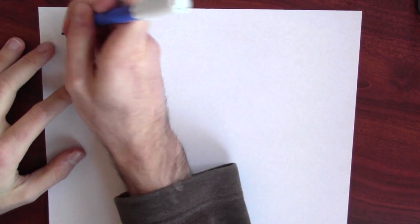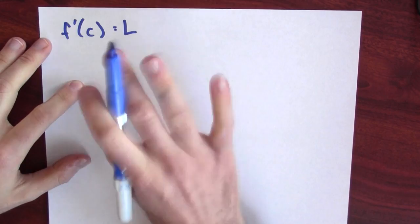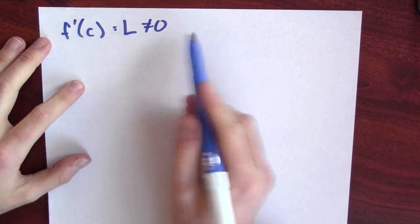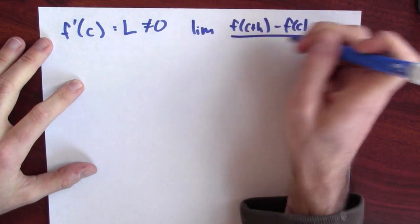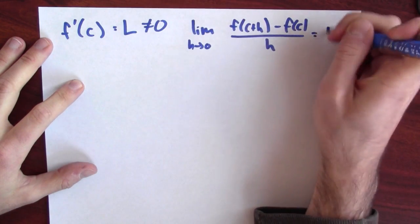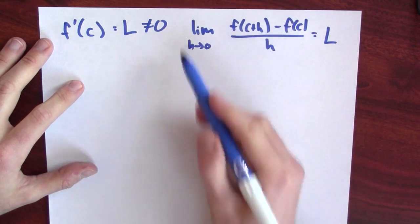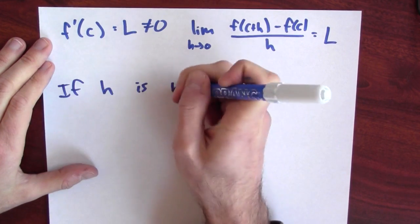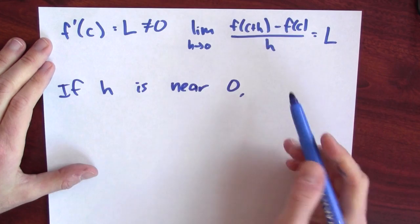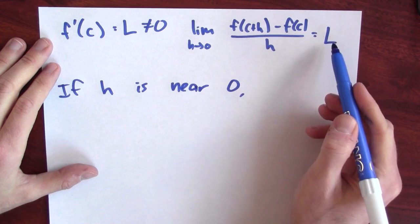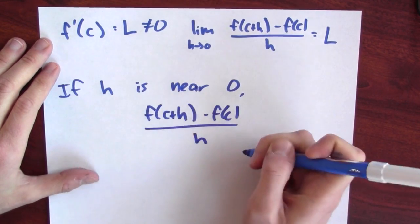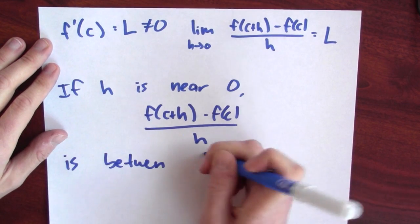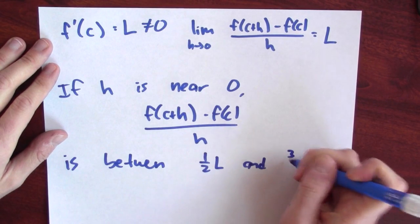I'd like to have a more formal, more rigorous argument for this. So, let's suppose that f is differentiable at c and the derivative is equal to l, some non-zero number. Now, what that really means from the definition of derivative is that the limit of f of c plus h minus f of c over h as h approaches 0 is equal to l. The limit is saying that if h is near enough 0, I can make this difference quotient as close as I like to l. In particular, I can guarantee that the difference quotient is between one-half l and three-halves l.